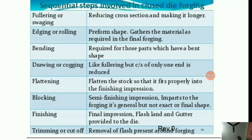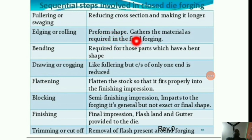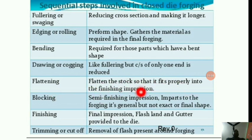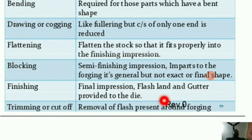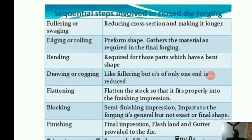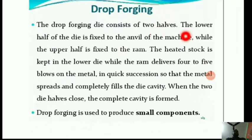The sequential steps in closed die forging are: (1) Fullering or swaging — reducing cross-section and making it longer; (2) Edging or rolling — used to perform or give shape, gathering material as required; (3) Bending — required for parts which have a bend; (4) Drawing or cogging — like fullering but only one end's cross-section is reduced; (5) Flattening — so the stock fits properly into the finishing impression; (6) Blocking — a semi-finishing operation giving the forging its general but not final shape; (7) Finishing — final impression with flash line and gutter provided in the die; (8) Trimming or cutoff — removal of flash present around the forging.